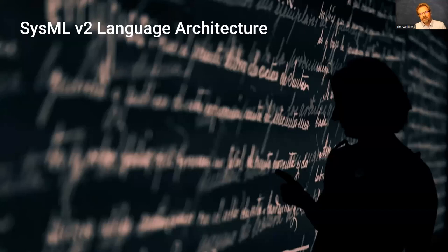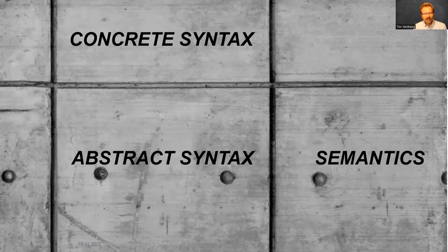Let's look at the language architecture. I won't show all elements — requirements, parts, breakdowns — there isn't enough time. For the OSLC community, what's of particular interest is how the architecture looks, how the data structures look, and how it works. The architecture of SysML v2, like many other modeling languages, consists of three pillars: the concrete syntax, the abstract syntax, and the semantics — the meaning of things.